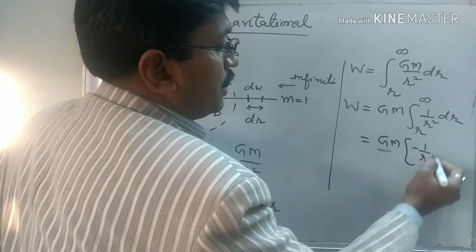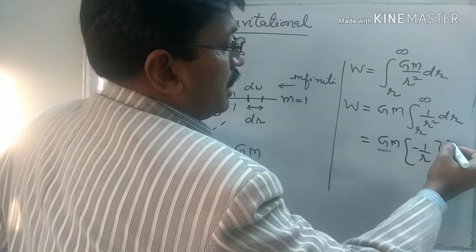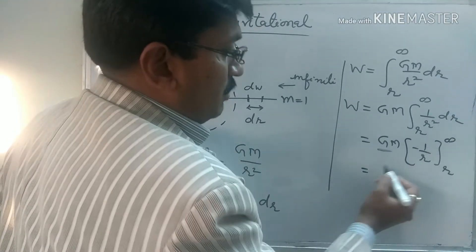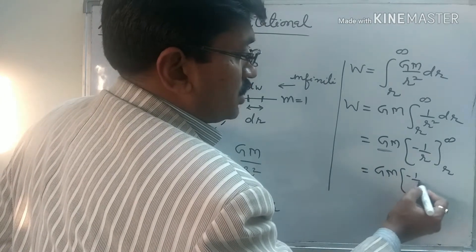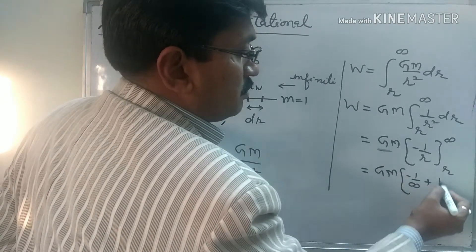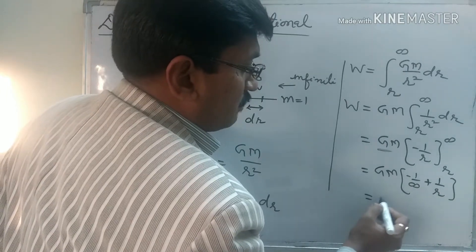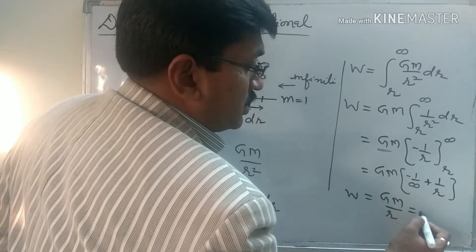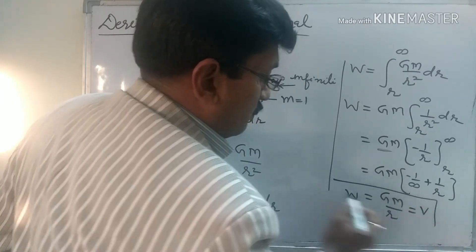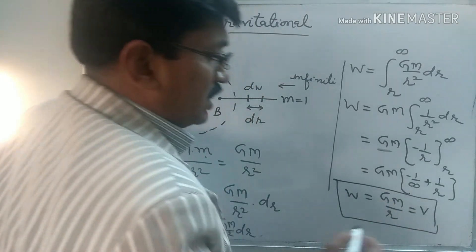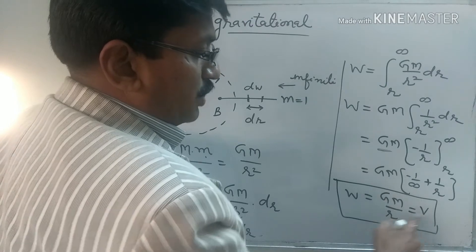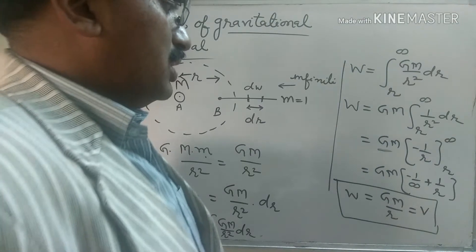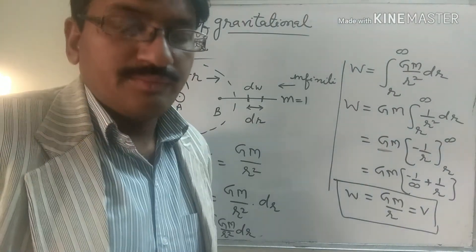Applying the limits from small r to infinity: putting the upper limit gives GM times minus 1 upon infinity, and the lower limit gives plus 1 upon r. Since 1 upon infinity equals zero, the work done becomes GM upon r. This work done represents the gravitational potential. Since GM is constant, the gravitational potential of the body is inversely proportional to the separation r, meaning V is inversely proportional to r. Thank you.